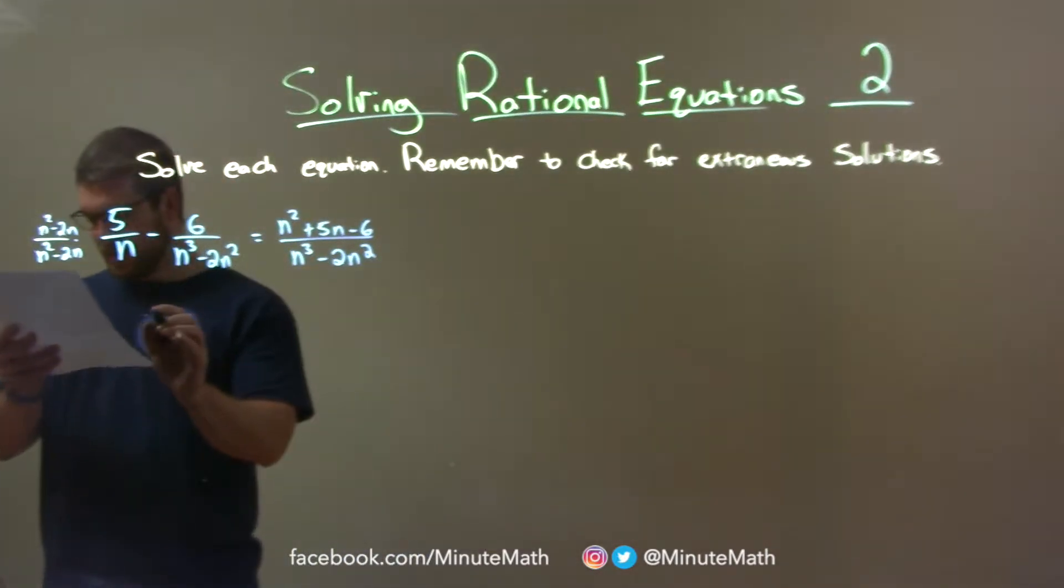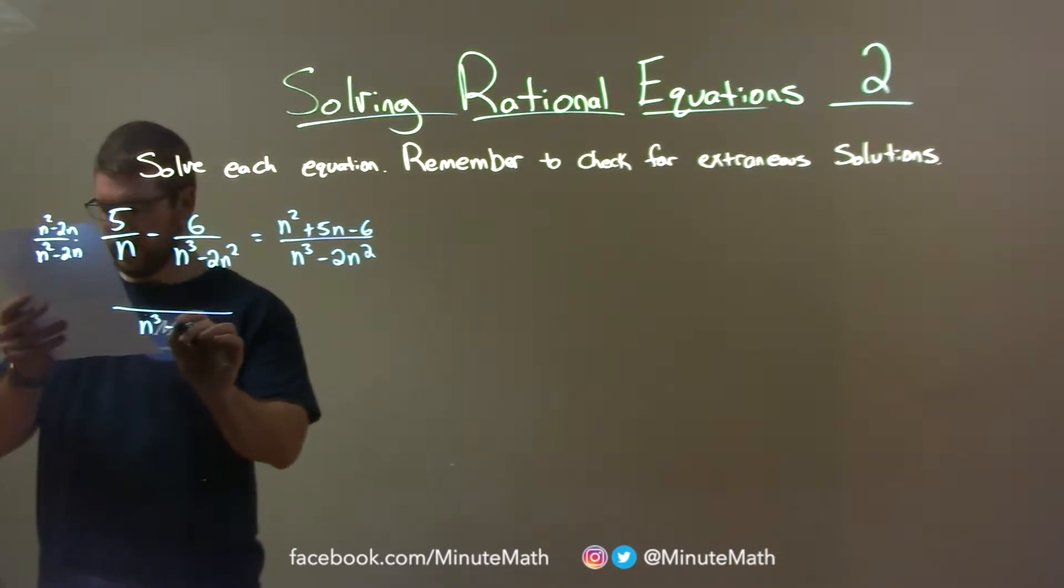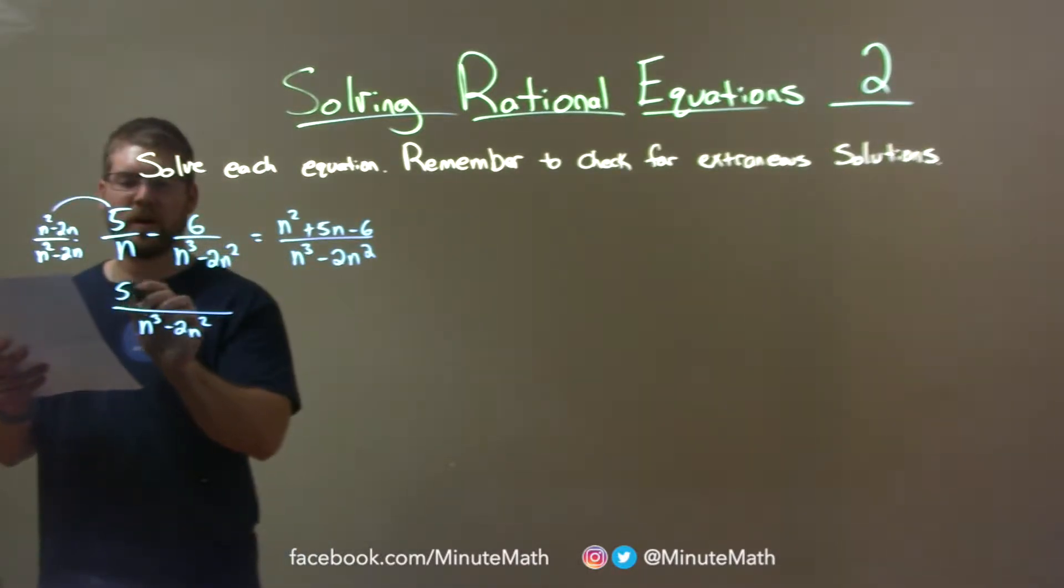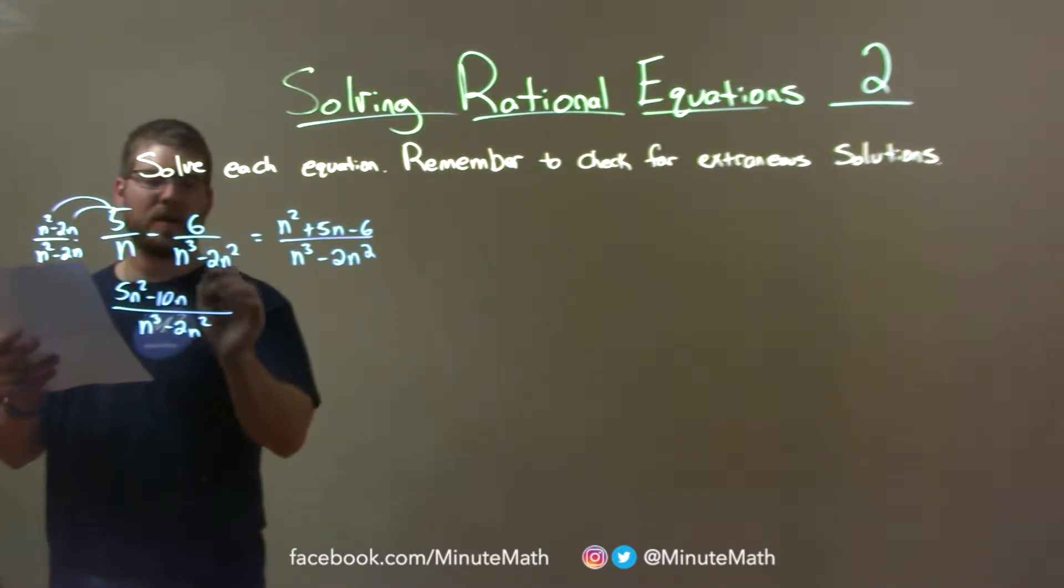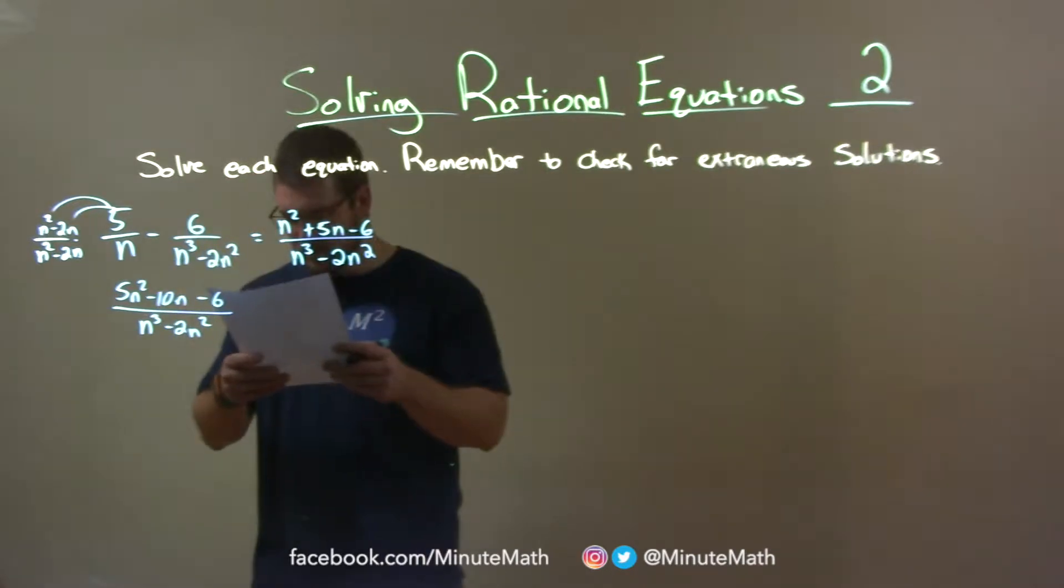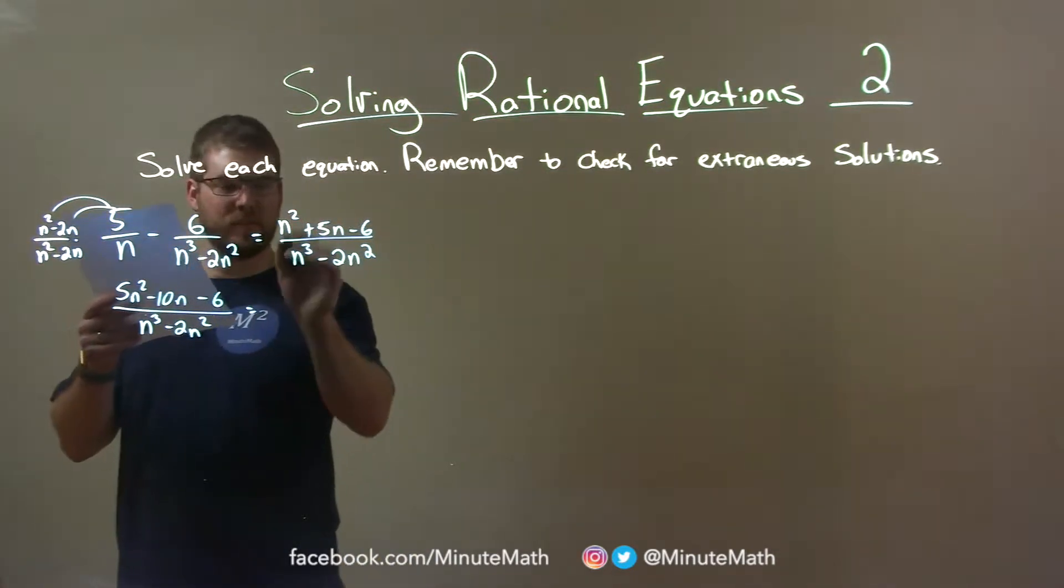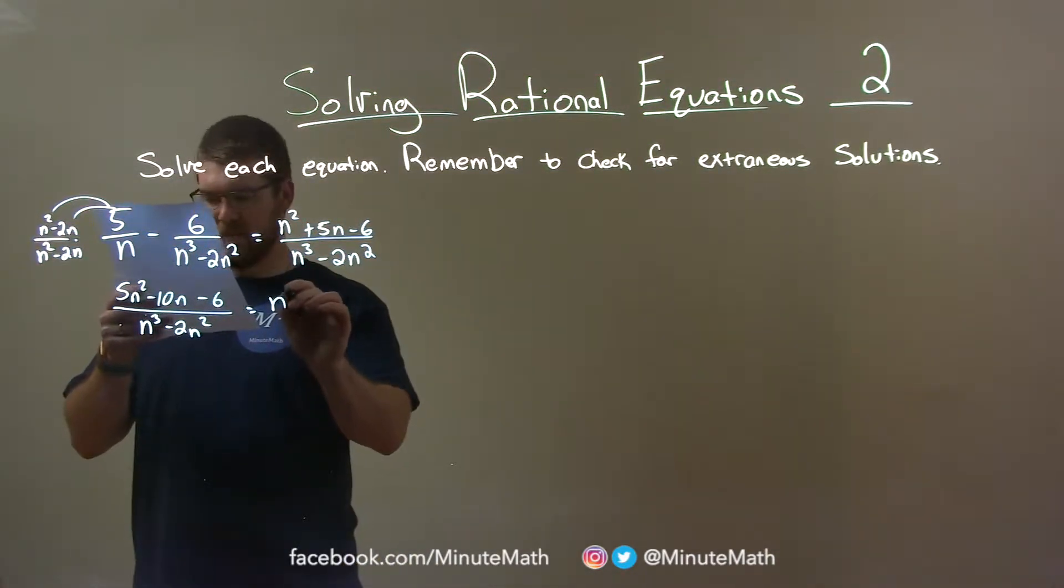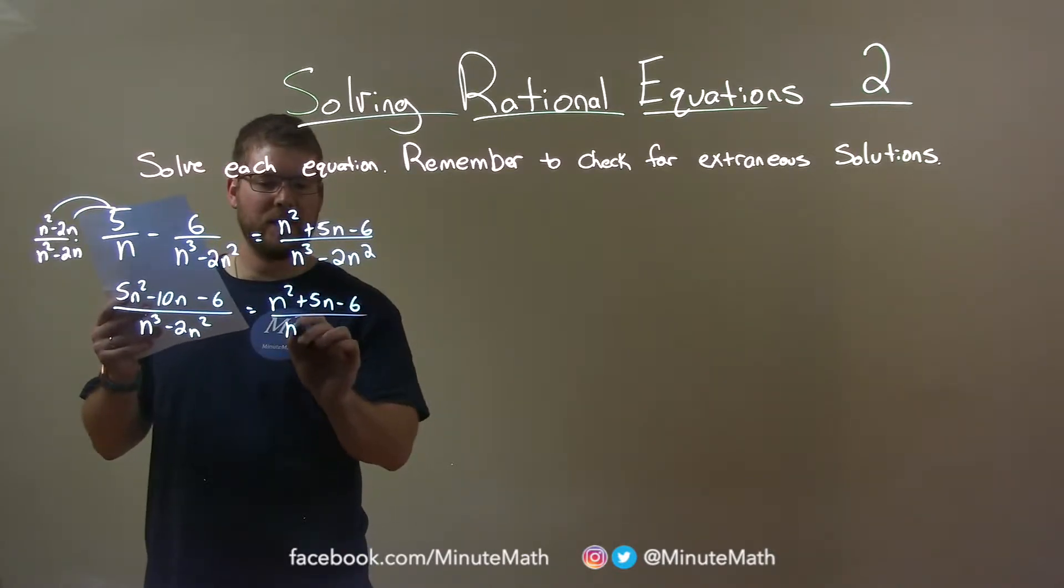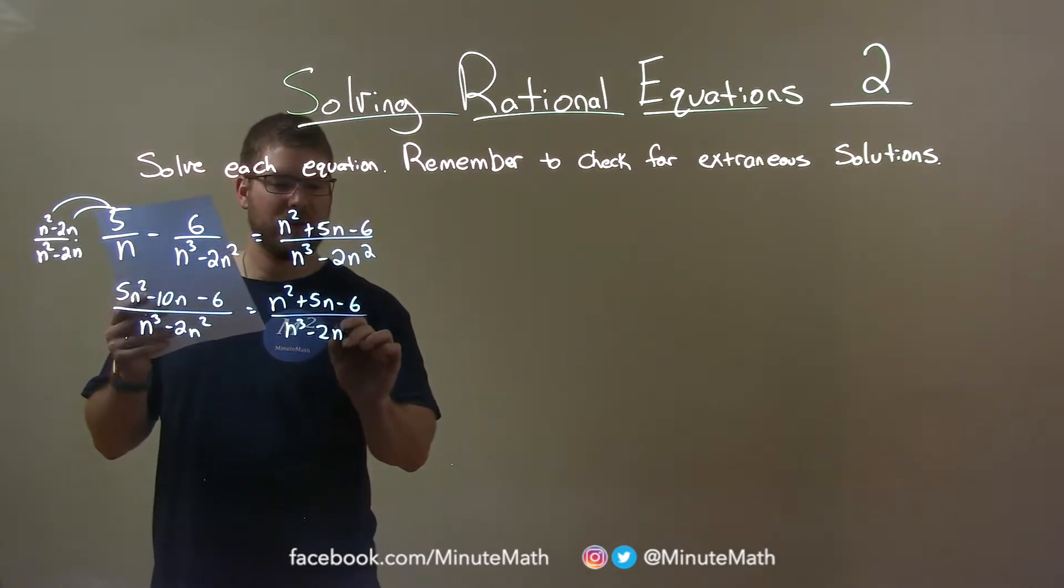So let's do that. This becomes the denominator, like I wanted, n to the third minus 2n squared. And the numerator: 5 times n squared is 5n squared, 5 times minus 2n is minus 10n, and here we just have minus 6. Right-hand side is just what we have here: n squared plus 5n minus 6 over n to the third minus 2n squared.